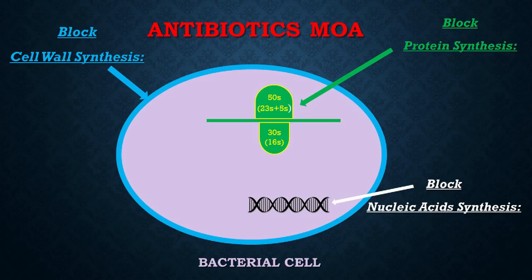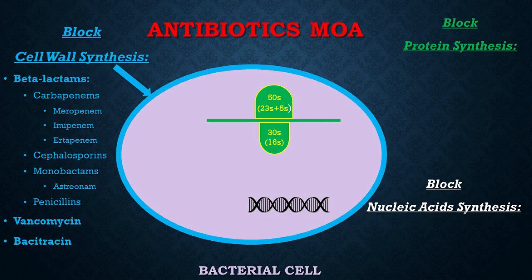Moving on to the mechanism of action of antibiotics — it is very simple. Our antibiotics target three things: the cell wall, which supports the structure of the bacteria and protects it from lysis; the ribosomes, where proteins are synthesized; and the DNA. Let's see which antibiotic targets which structure. The antibiotics that target the bacterial cell wall are all bactericidal, as once the cell wall is destroyed the bacteria dies — there is no plan B.